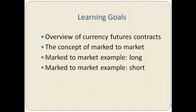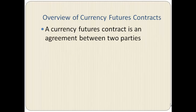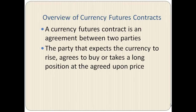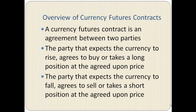A currency futures contract is an agreement between two parties where one party agrees to buy and the other party agrees to sell a fixed amount of currency at a future date known as the delivery date. The party that expects the currency to rise takes a long position at the agreed-upon price. The party that expects the currency to fall agrees to sell, or takes a short position, at the agreed-upon price.